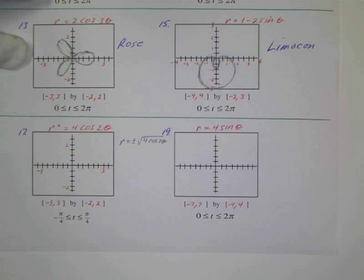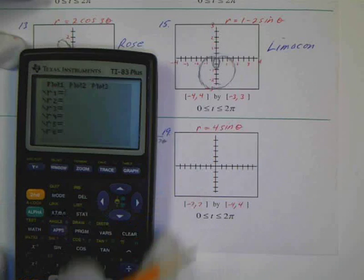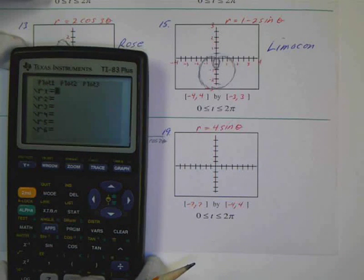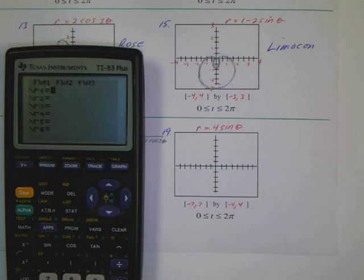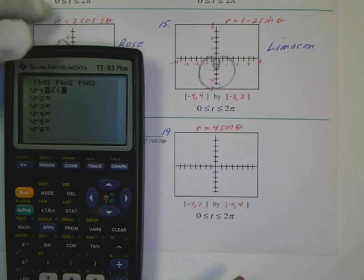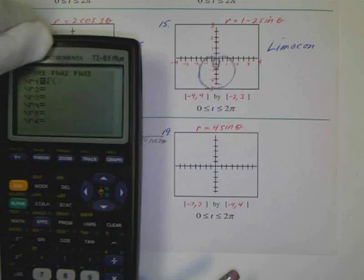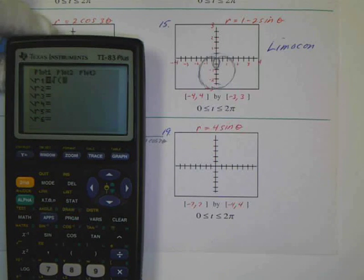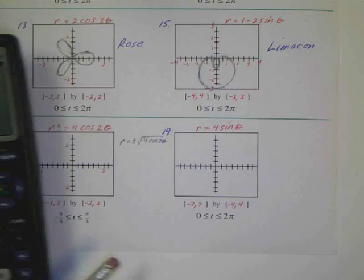So I'll have to take the positive and the negative, it's kind of like a circle, it's going to give me the top and the bottom of this curve. So I'll say r equals the square root, second square root of 4 cosine of 2 theta.